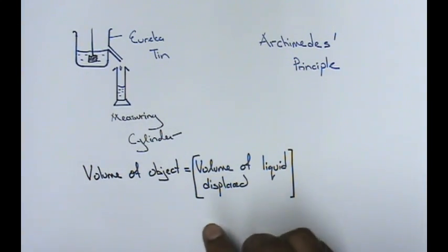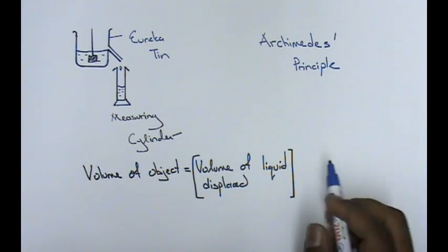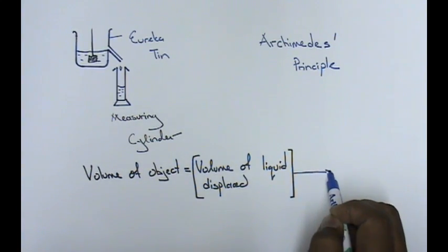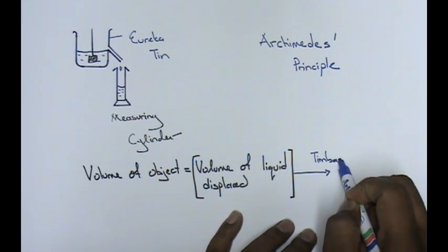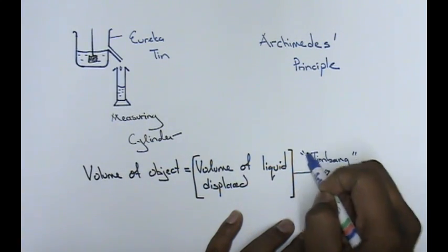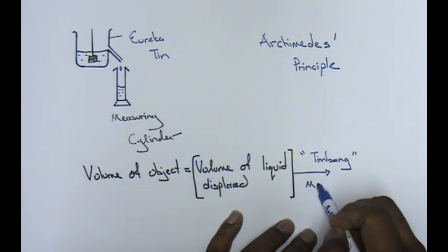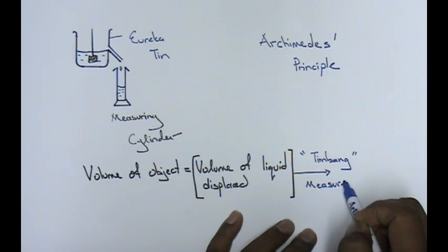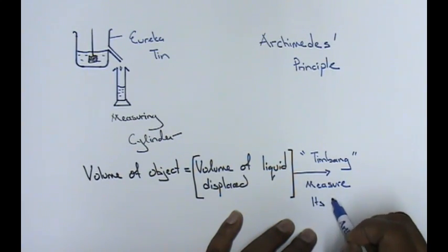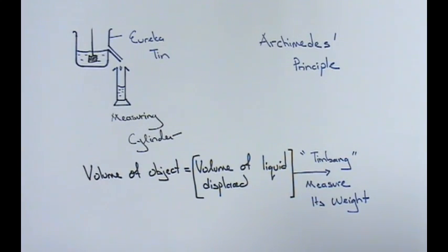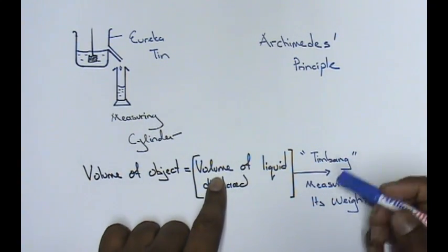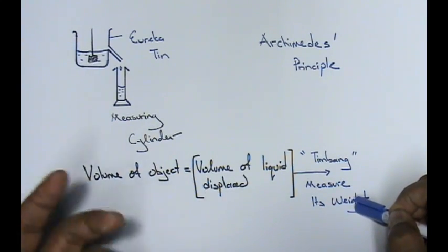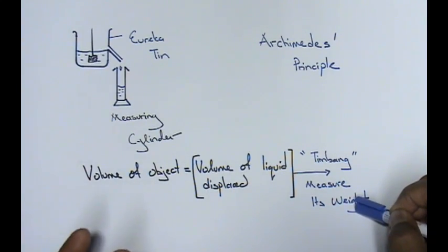We are going to take this volume of liquid displaced and we are going to weigh it. When I say timbang, we are going to measure its weight. The moment you take the volume of liquid displaced and you measure its weight - how you measure its weight is very simple.